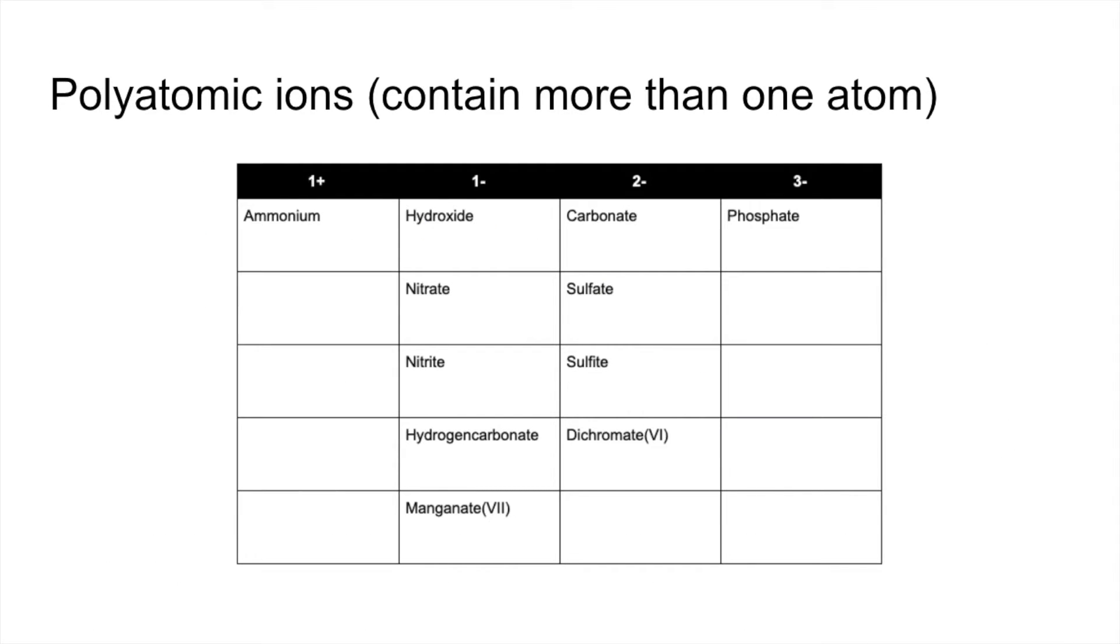So we'll move on to slightly more complicated ions now. These are polyatomic ions. They contain more than one atom. We're just going to look at these that are on the slide now. The ammonium ion is NH4 plus. And I'm afraid these are just going to have to be committed to memory.